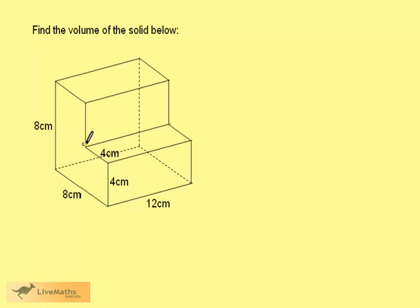We should also be able to see that we can split this solid into two cuboids. If we split along the lines I'm drawing here, it's split into one large cuboid on the bottom, plus this small cuboid on top.